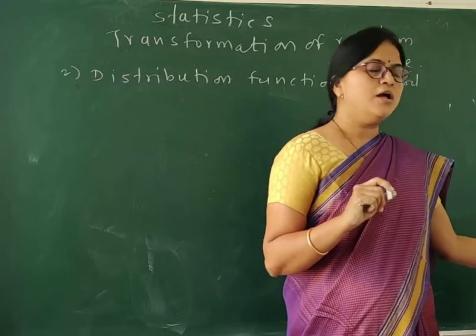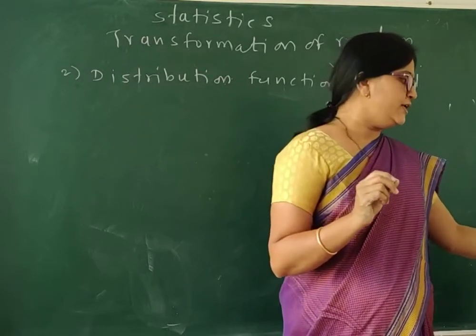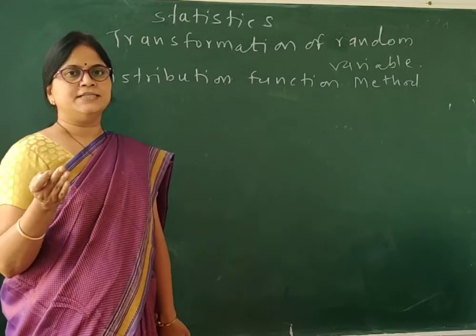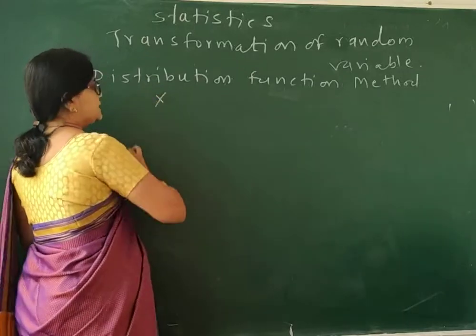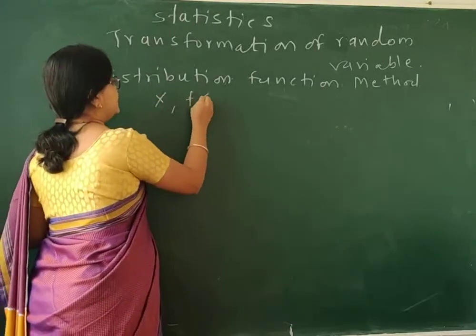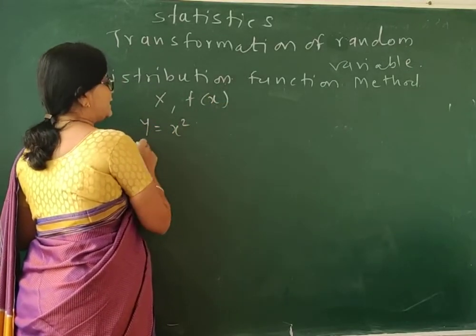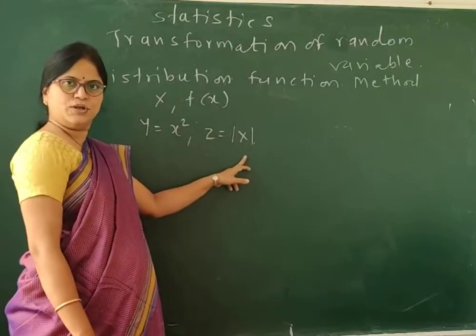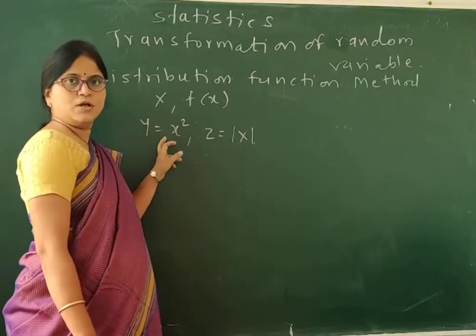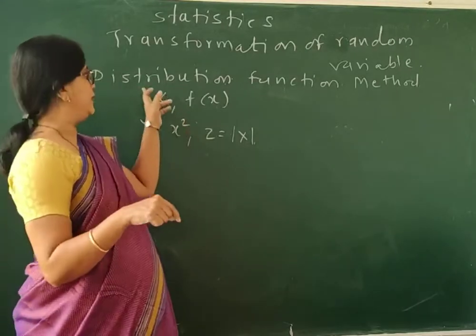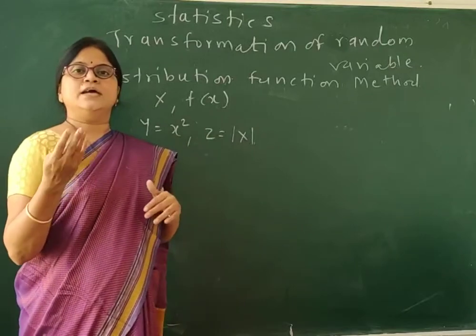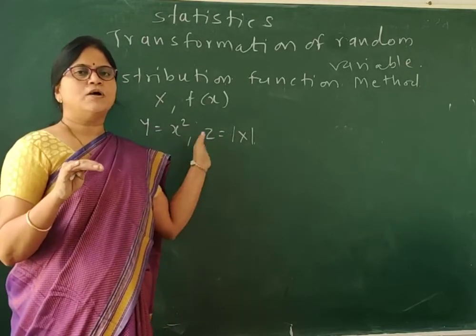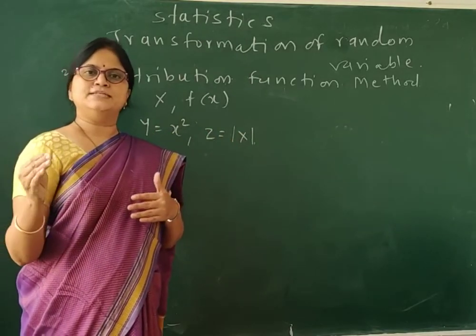In the distribution function method, we need to find the distribution function of a variable for which we need to find the probability density function. That means x is a random variable. We need to find the distribution of say Y = X² or we need to find the distribution of say Z = |X|. So here we are finding the distribution function of Y, and then after finding the distribution function, we can take the derivative to get the probability density function of Y.